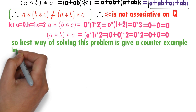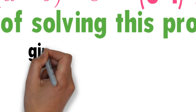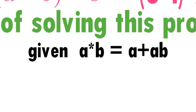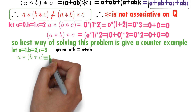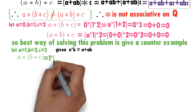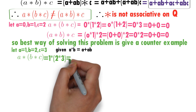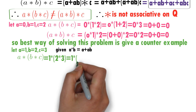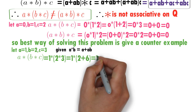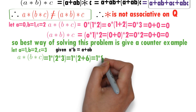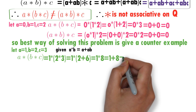I will take a = 1, b = 2, c = 3. Now calculate a★(b★c) = 1★(2★3). First, 2★3 = 2 + 2·3 = 2 + 6 = 8, so 1★8 = 1 + 1·8 = 9.